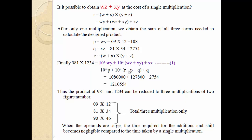Substituting the values p=108, q=2754, and computing r from (w+x)(y+z), then adding all terms gives the same answer as the classic algorithm. Crucially, only three multiplications are required: 09×12, 81×34, and 90×46 — compared to four in the classic algorithm. So we can solve the same problem with just three multiplications.